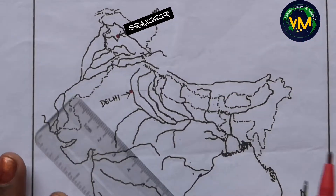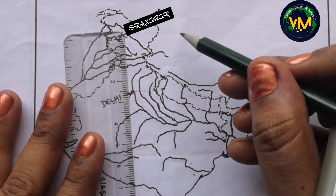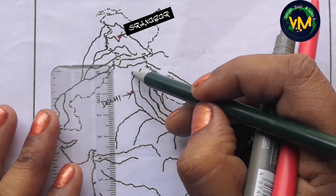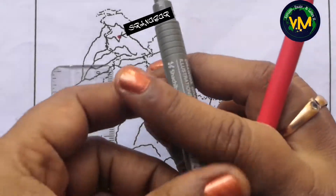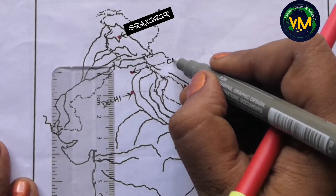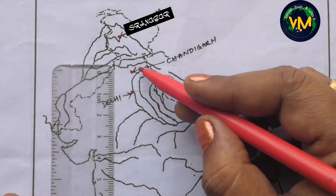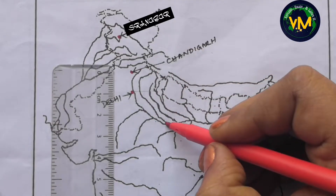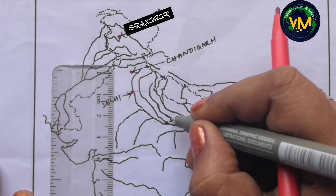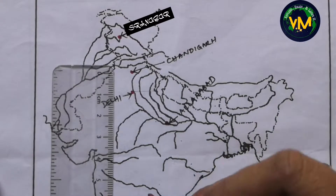From Delhi, exactly northward, if you take a scale and measure exactly one centimeter from Delhi. Write it in capital letters. Allahabad is very easy to mark — it is the confluence of River Yamuna and Ganga, so in the center you mark it as Allahabad.